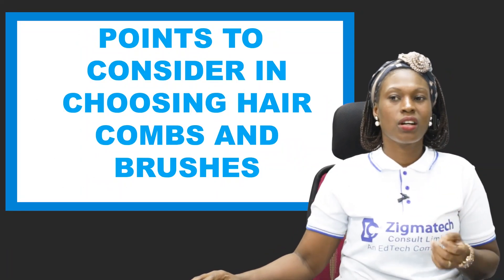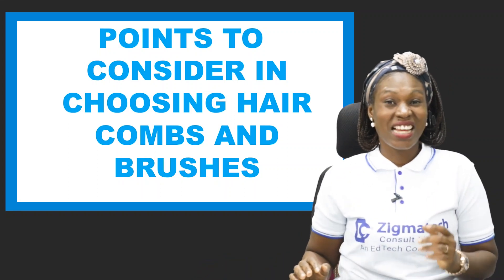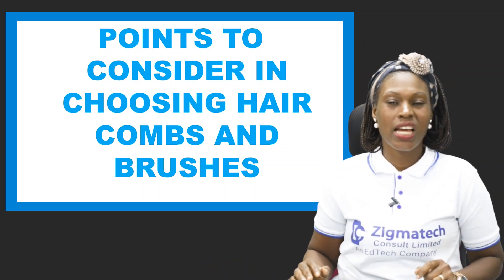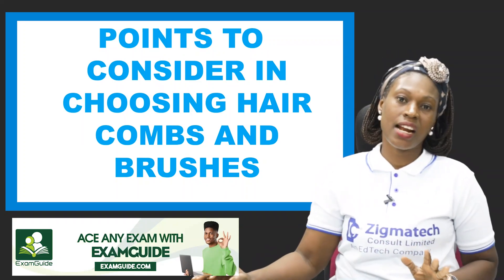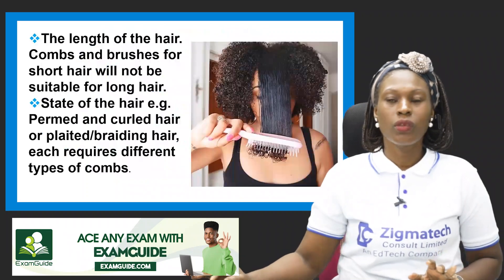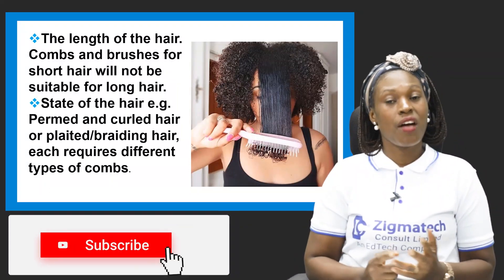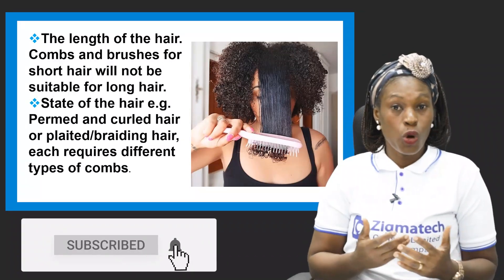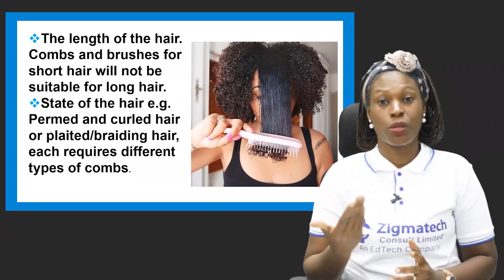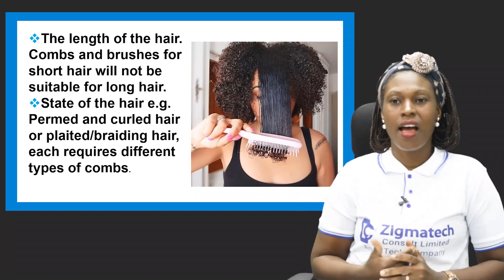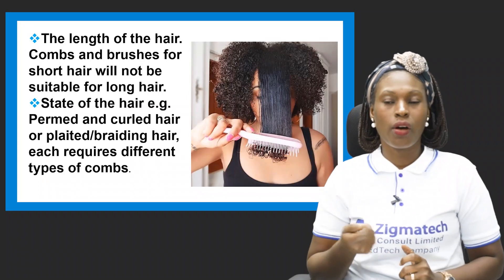Now let's look at some points to consider when choosing hair combs and brushes. You have to put in a little effort to pick the right combs and brushes for your hair. The first thing to consider is the length of your hair. If you have short hair, you pick combs suitable for short hair — you wouldn't use a comb for long hair on short hair. So consider: do you have short hair or long hair?